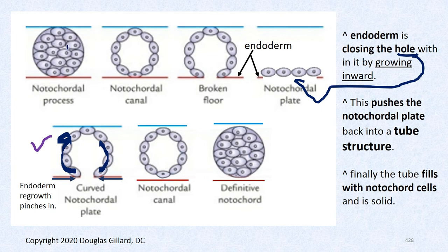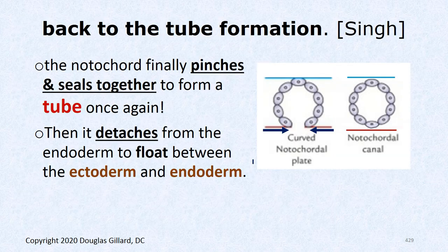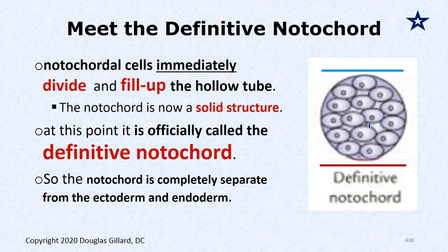The notochordal process and the definitive notochord look exactly the same structurally, but these cells have tremendous stem cell potential — they have the ability to induce many functions and release signaling molecules that will soak up and start creating a neural plate. The notochordal process can't do that, but the definitive notochord can. Something about this process turns on a whole bunch of genes. In the very last step, the definitive notochord detaches — it's not attached to ectoderm or endoderm. It's free floating. There's our definitive notochord.